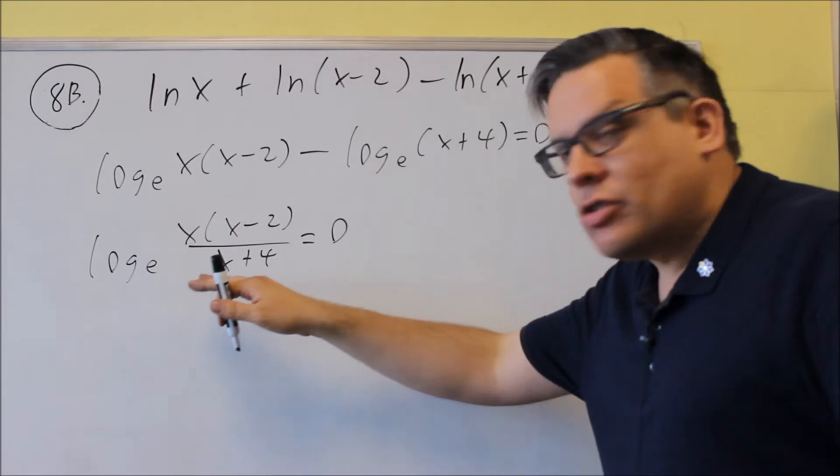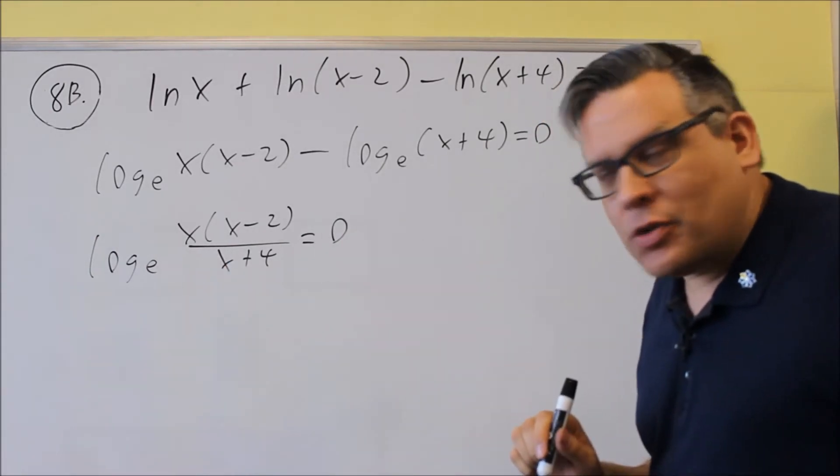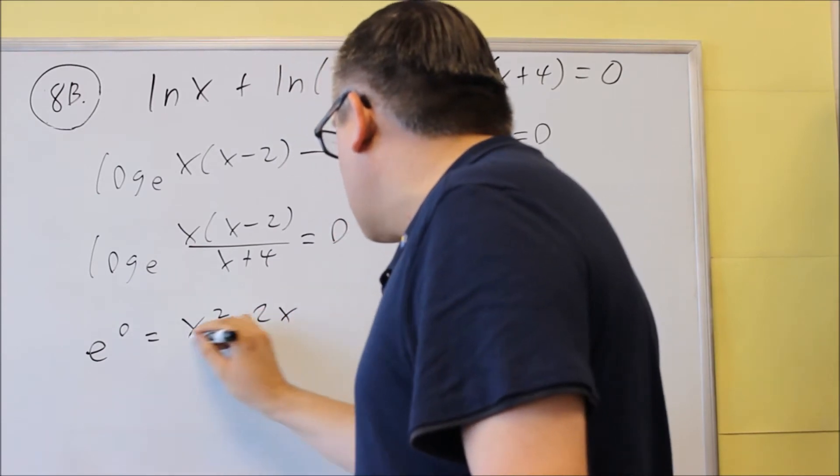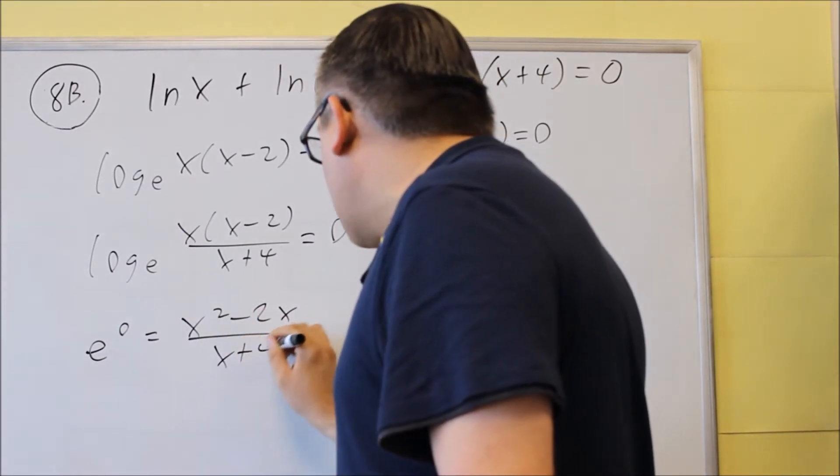Next, we're going to change from log form into exponential form. e to the 0 is going to equal x squared minus 2x all over x plus 4.